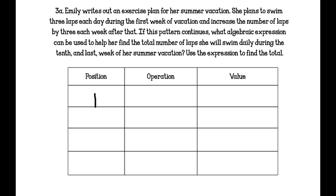So the first week, she plans to swim 3 laps each day. The second week, she plans to add 3 to that, so the second week she plans to do 6 laps. The third week, she plans to add 3 to that, so she plans to do 9 laps. So if we were talking about the hundredth week or the tenth week, whatever it is, we want to know what would the algebraic expression be to explain it. So how can you get from a 1 to a 3, a 2 to a 6, and a 3 to a 9?